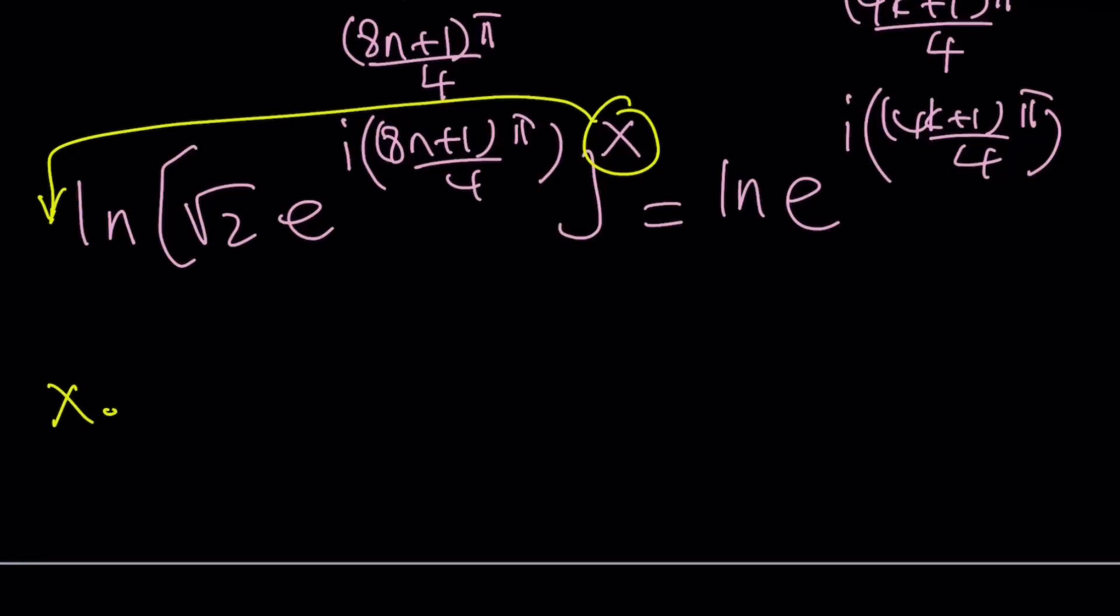Notice that we can separate this into two lns. ln(a·b) can be written as ln(a) + ln(b). So I'm going to write it as ln(√2) + x times ln(e^(something)). But ln(e^(something)) is just going to be that thing.